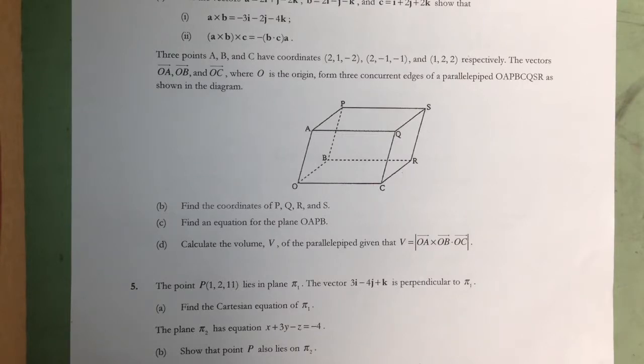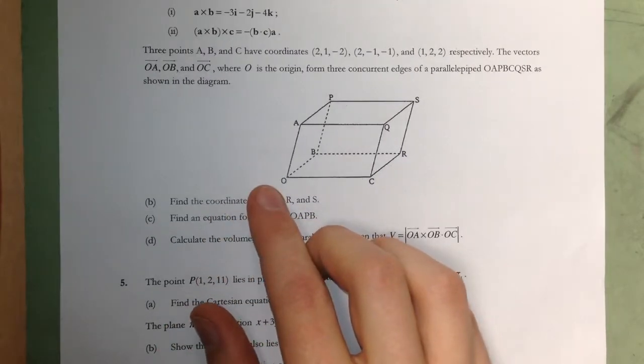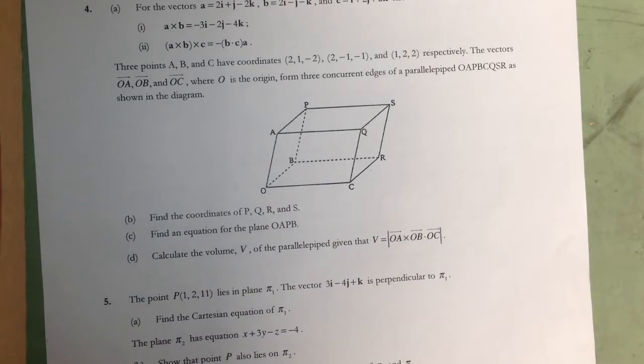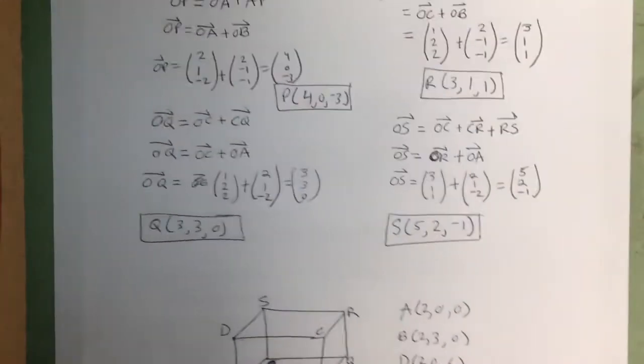I'm going to walk through how I found the points on this shape and then I'm going to walk through a harder one where we don't have the origin on it, because several of you pointed out that this problem was easier because the origin was on the three-dimensional shape. So I'm going to walk through both of those.